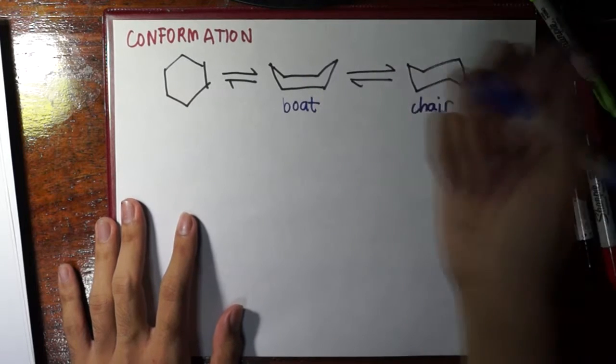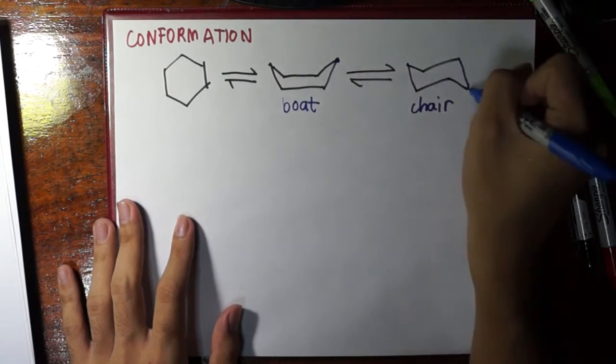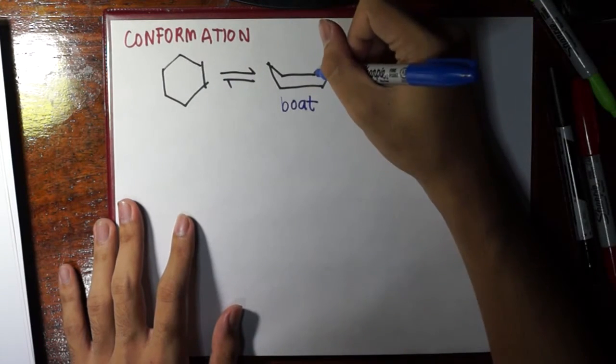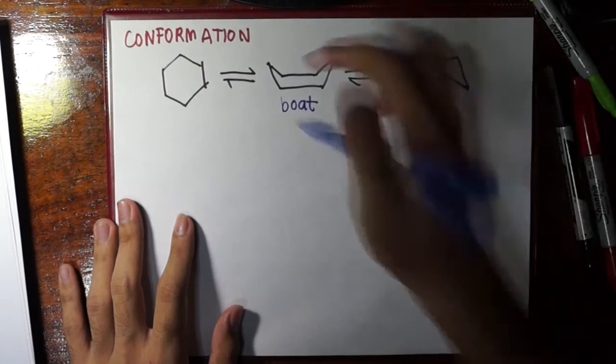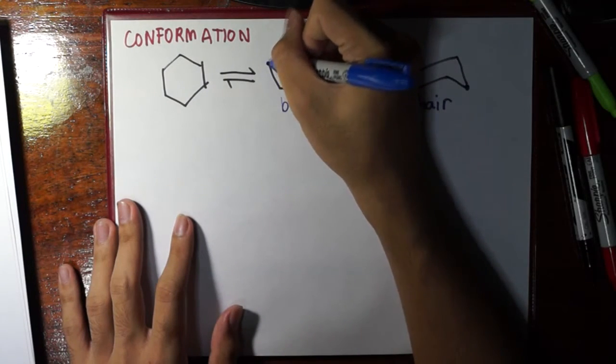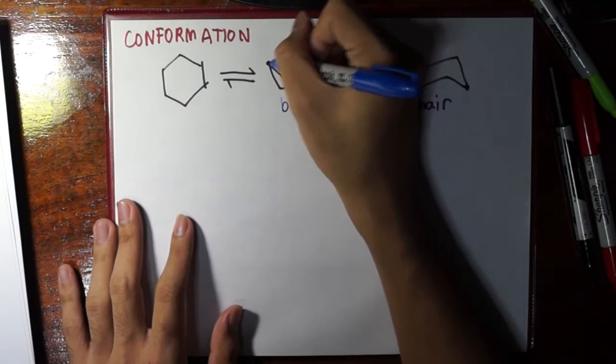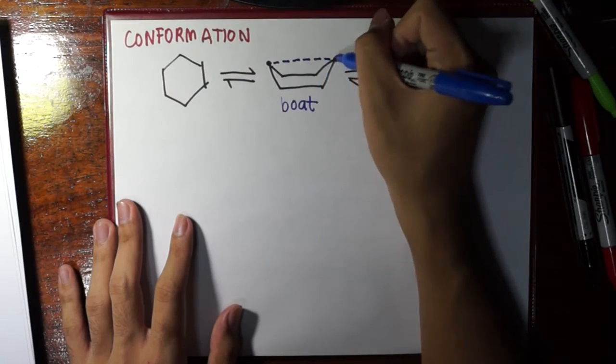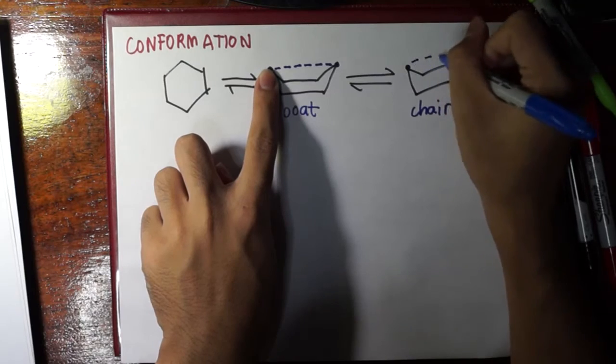So the difference between the boat and the chair conformation is actually this one and this one. The only difference is in the boat, this part is flipped down in the chair. So the distance between this, let's go to this carbon first. The distance between this and the carbon I first mentioned is this. They're quite near each other as compared to this one. The distance is greater.